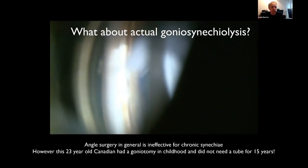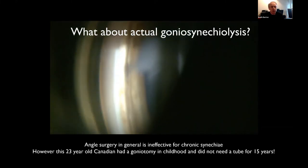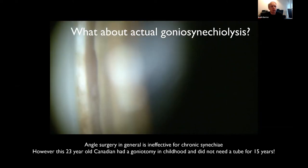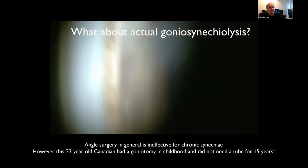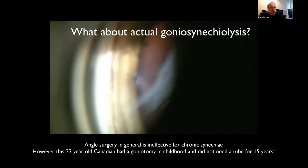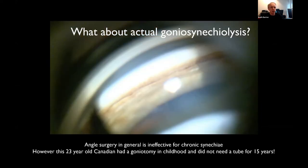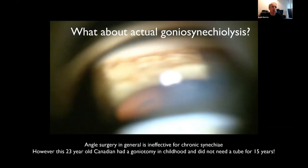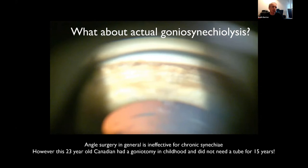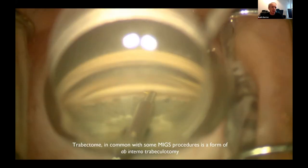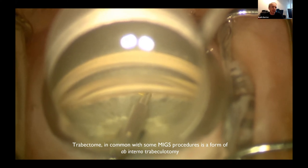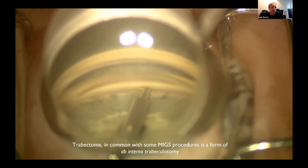What about actual goniosynechialysis? This was a 23-year-old Canadian woman who came to me with bad uveitic glaucoma. She had been managed as a child in Canada with goniotomy, which worked very well for about 15 years, until she eventually needed a tube. In childhood, goniotomy can help; in adulthood it doesn't work. Things like Trabectome — which are basically goniotomy — don't provide lasting pressure lowering.